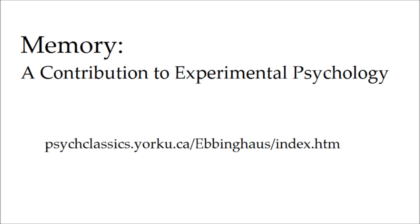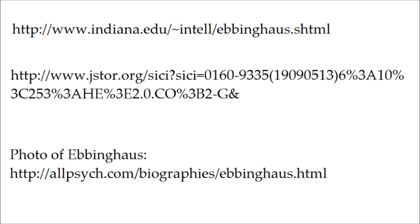Ebbinghaus published his results in 1885 in a book titled Memory: A Contribution to Experimental Psychology. If you'd like to read Ebbinghaus's book, it's available online at psychclassics.yorku.ca/ebbinghaus/index.htm. If you'd like to learn more about Ebbinghaus's life and his other research, here are some sites to check out. Thanks for watching.